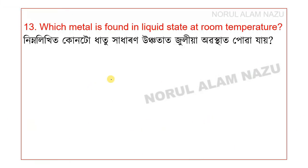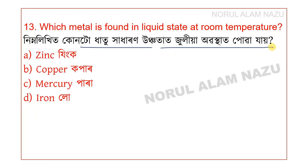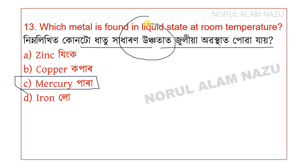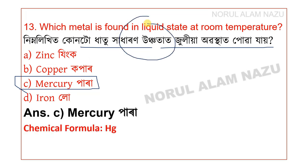Question 13: Which metal is found in a liquid state at room temperature? The options include zinc, copper, and iron. The answer is mercury. Its chemical symbol is Hg.